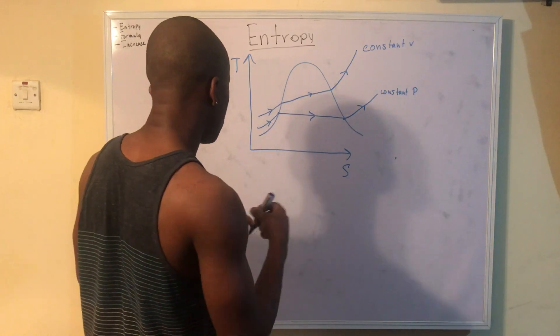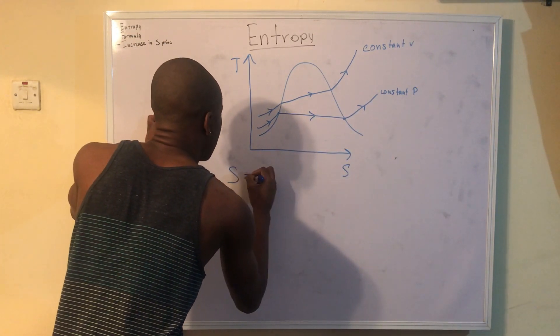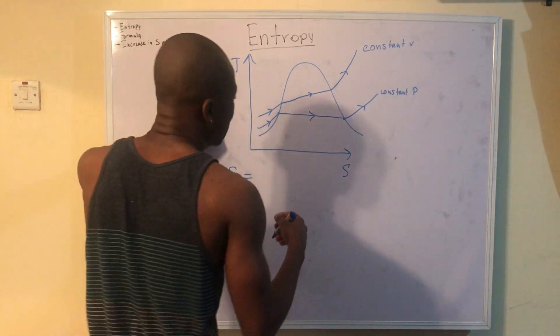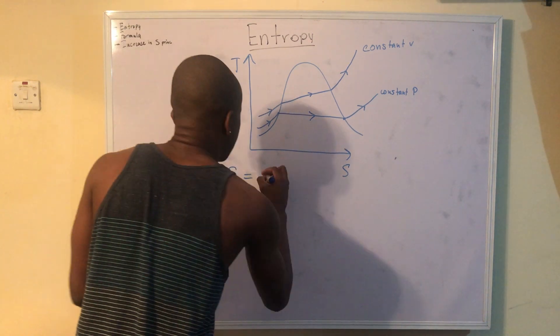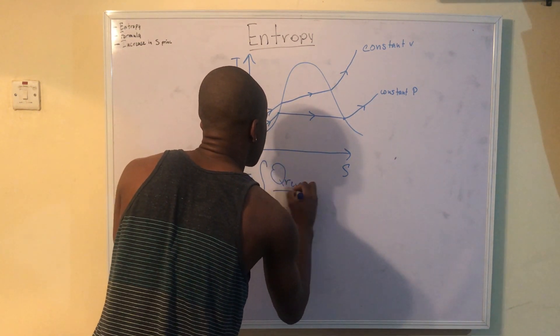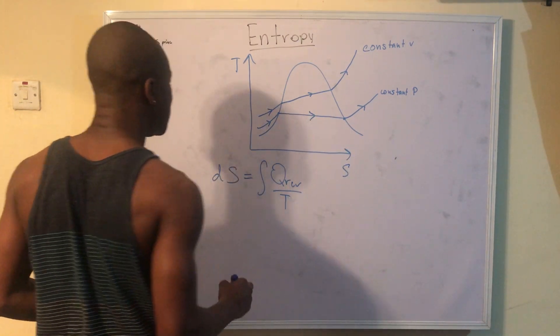It's also important to note. So when we have a diagram like this, right? And you're looking for your heat, right? They might ask you, what is the heat, right? And they might just give you a simple thing to do. So we know that this can be defined by this. And this is sort of the change in entropy. So you can write DS, right?